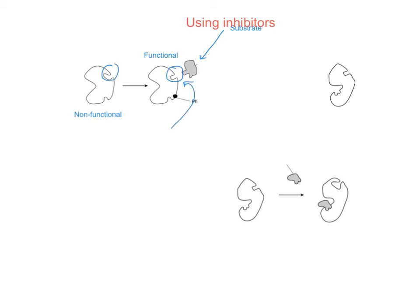The enzyme exists in its non-functional form. What happens is a substance can actually bind elsewhere on the enzyme and cause the active site to change shape to actually become complementary to that substrate — so now it's basically been activated.